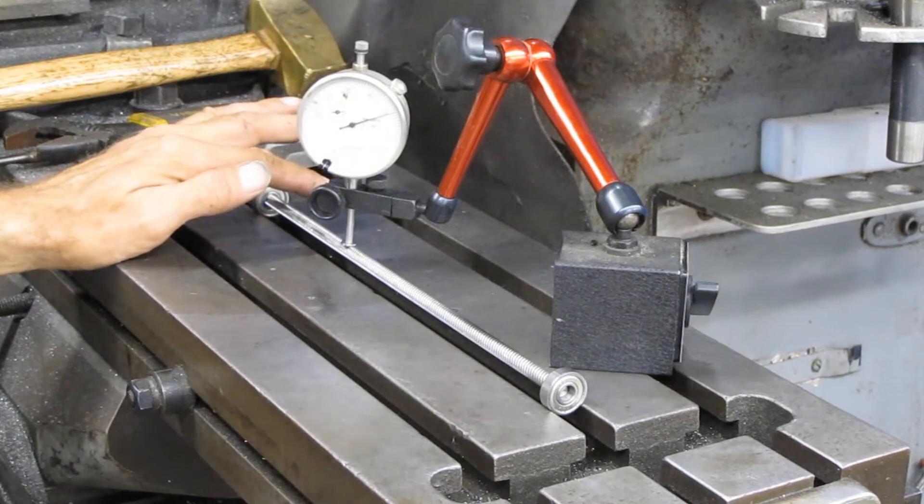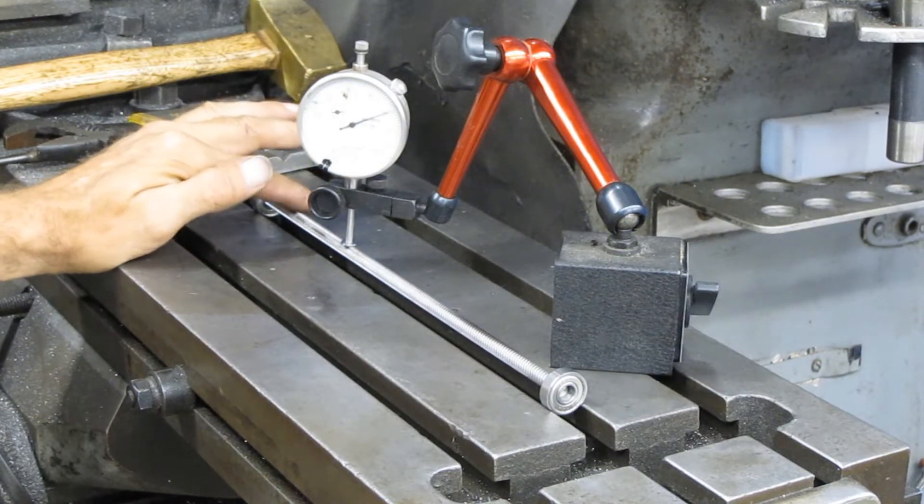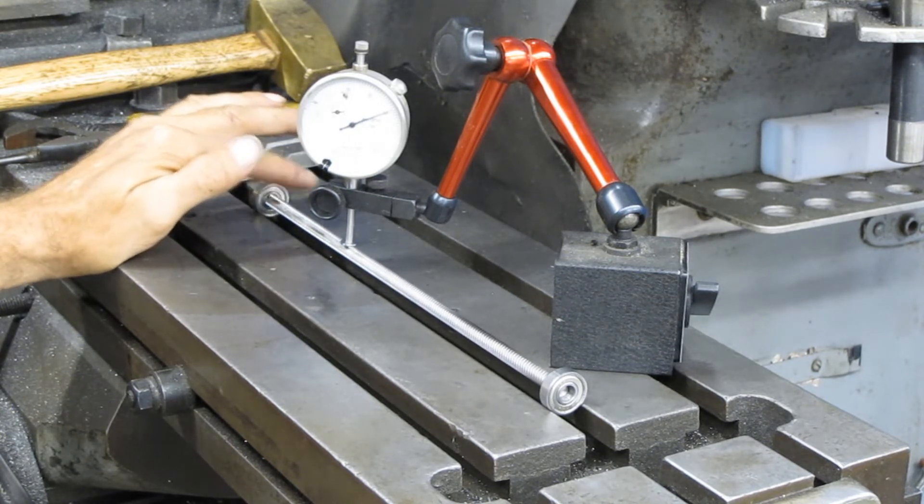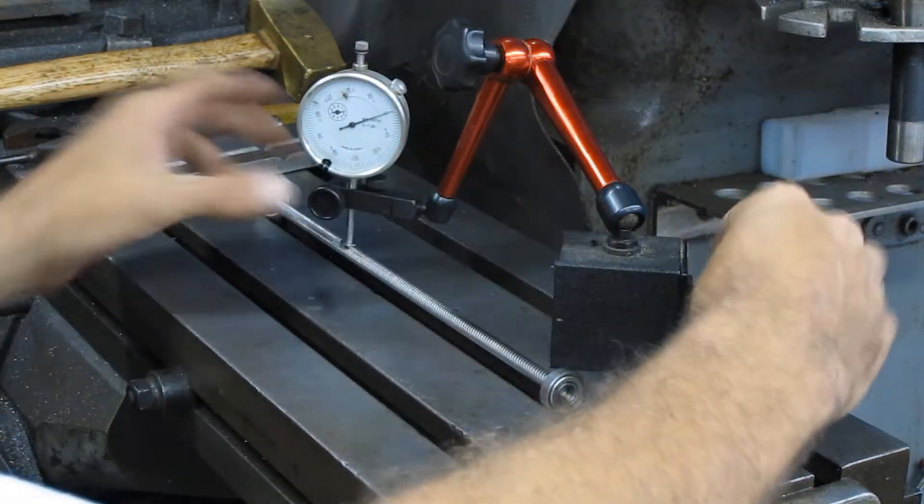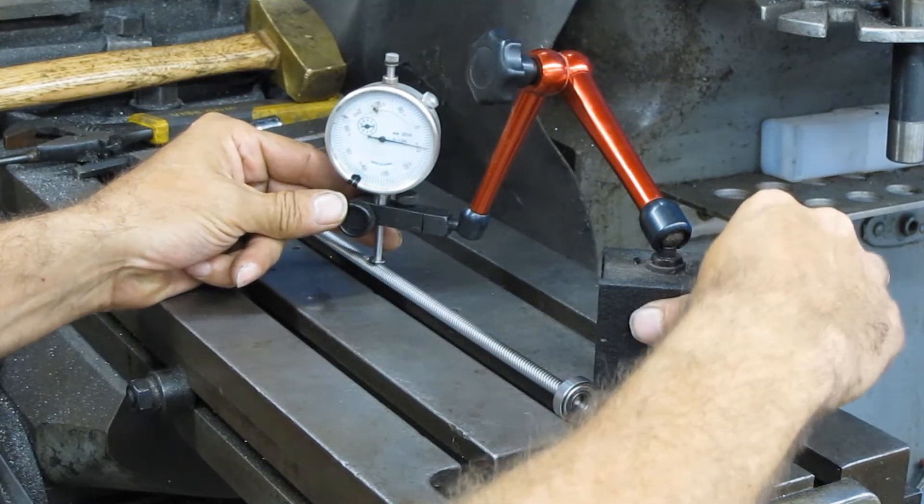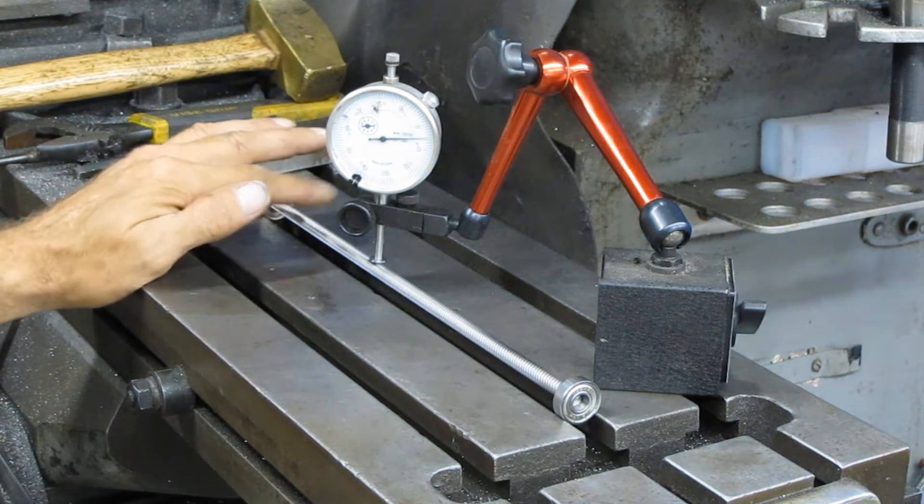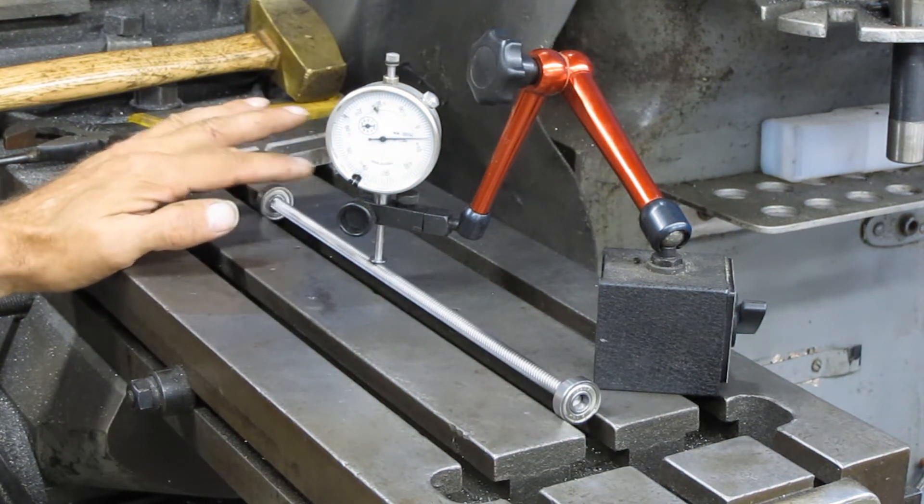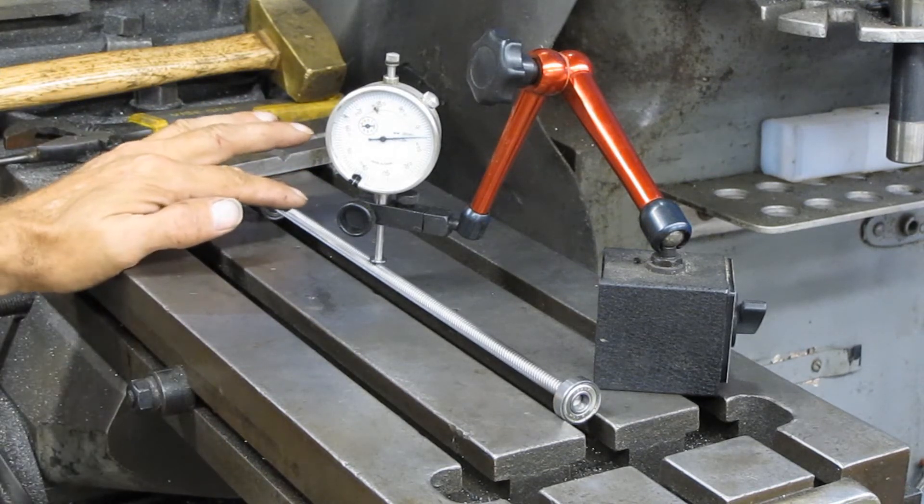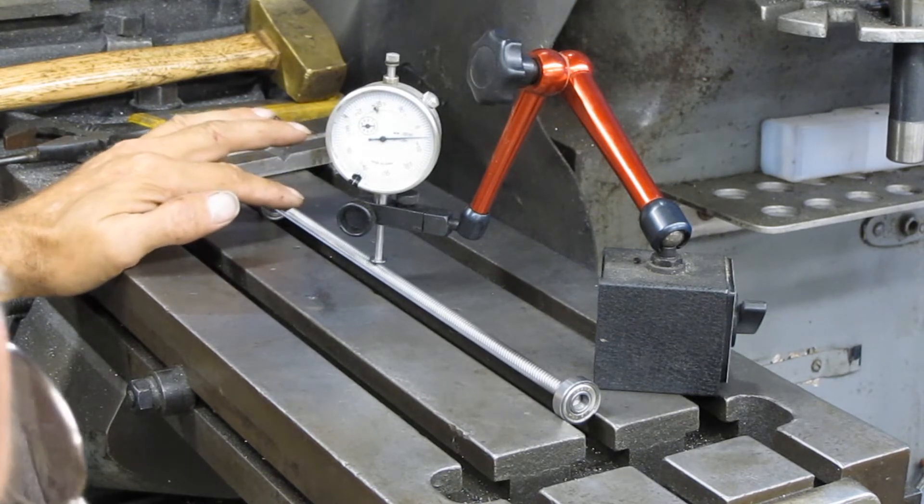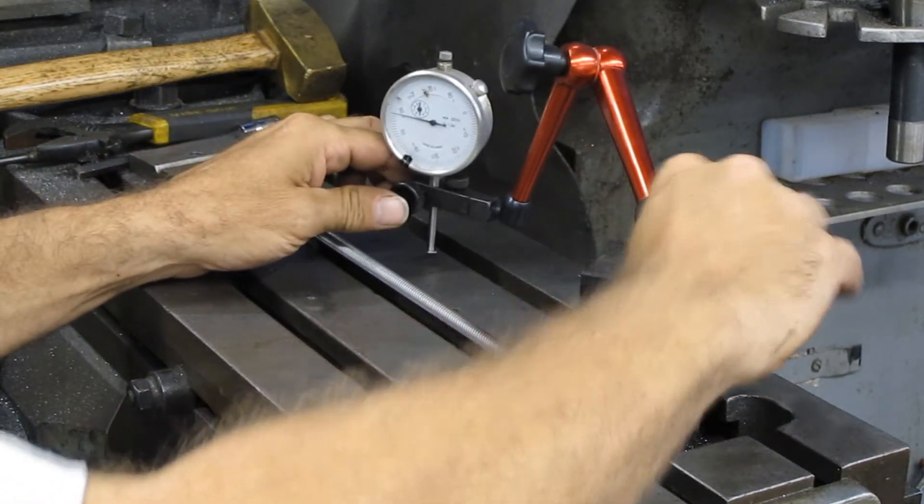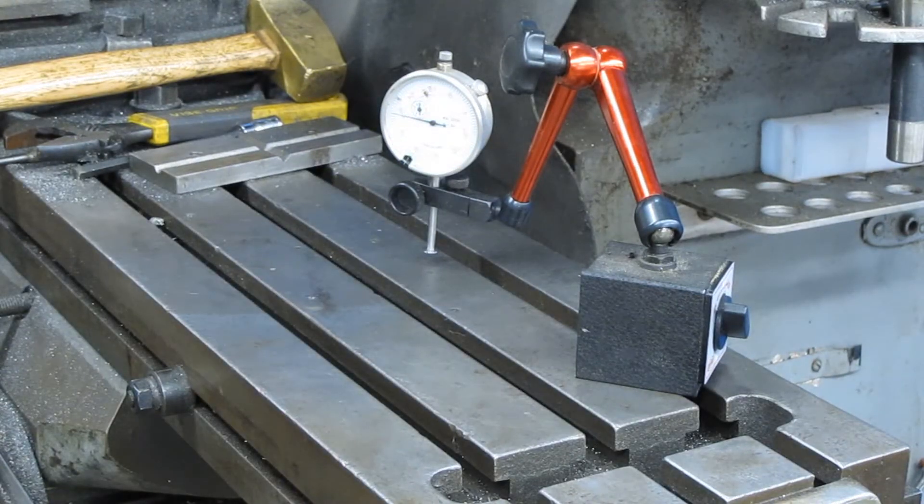Alright, here's the lead screws. That's one of them. We got about one and a half thousandths maybe, which I'm pretty impressed with that. I'm going to try the other one here. Let's see what we got going on here. Wow, that's really good. You can barely see it moving, not even a thousandth. That's awesome.